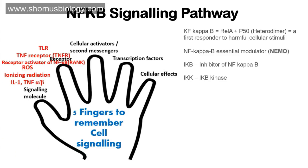The receptors for NF-kappa B signaling include toll-like receptors, which act as receptors for signals like LPS and flagellin. There are also tumor necrosis factor receptors, TNFR — if the signaling molecule is TNF-alpha or TNF-beta, the receptor will be TNFR. Additionally, there is the receptor activator of NF-kappa B, also known as RANK. These are all the receptors involved in NF-kappa B signaling.